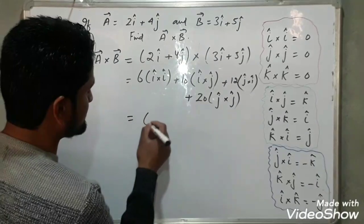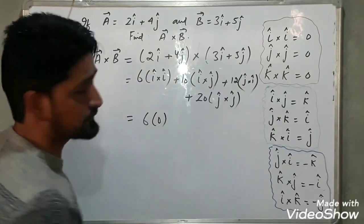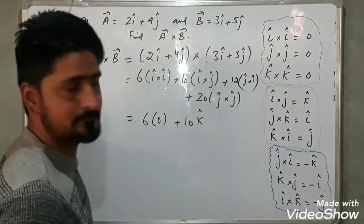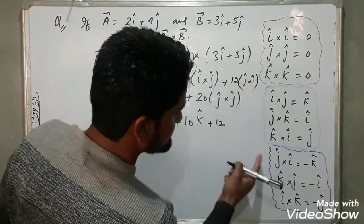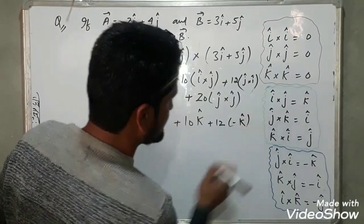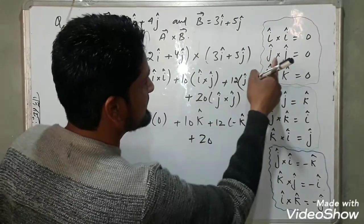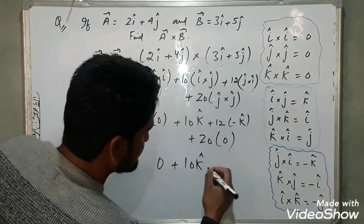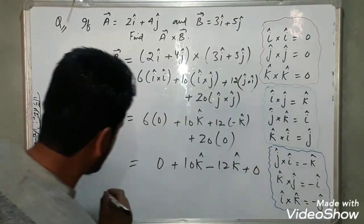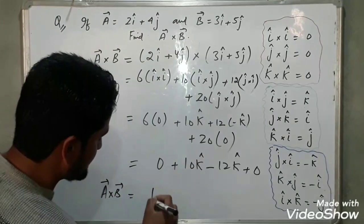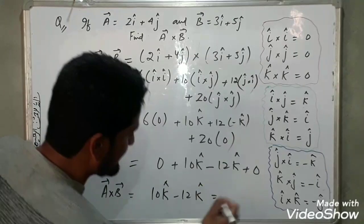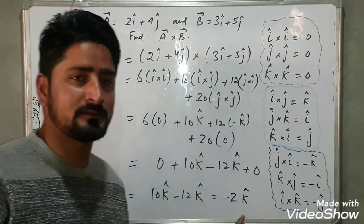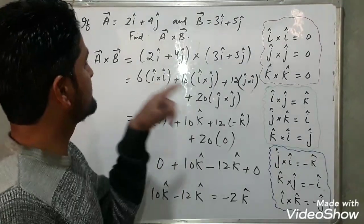So a cross b equals 6 times (i cross i) plus 10 times (i cross j) plus 12 times (j cross i) plus 20 times (j cross j). Now i cross i equals 0, so 6 into 0 is 0. i cross j equals k, so that is 10k. j cross i equals minus k, so that is plus 12 times minus k, giving minus 12k. j cross j equals 0, so 20 into 0 is 0. Therefore a cross b equals 10k minus 12k, which equals minus 2k.